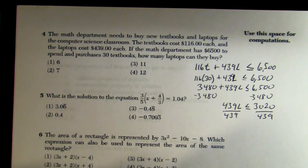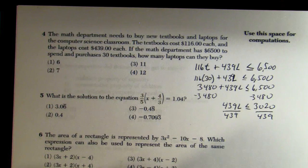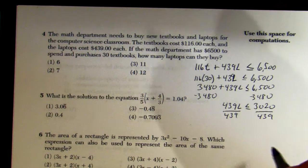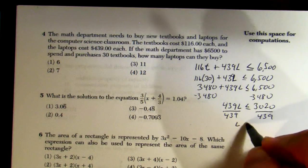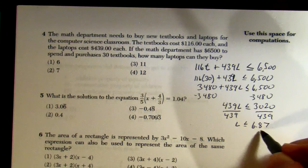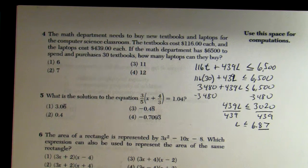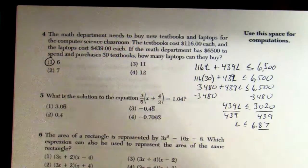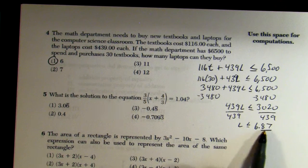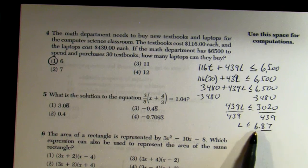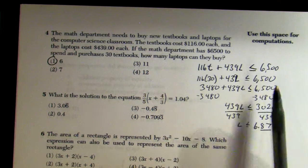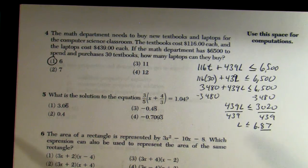Dividing 3,020 by 439 gives about 6.87. So l ≤ 6.87. You cannot buy 0.87 of a laptop, so the amount they can purchase is 6. Be careful — a lot of students round up to 7, but if you buy 7 you'll go over the $6,500 limit, so it has to be less than that.